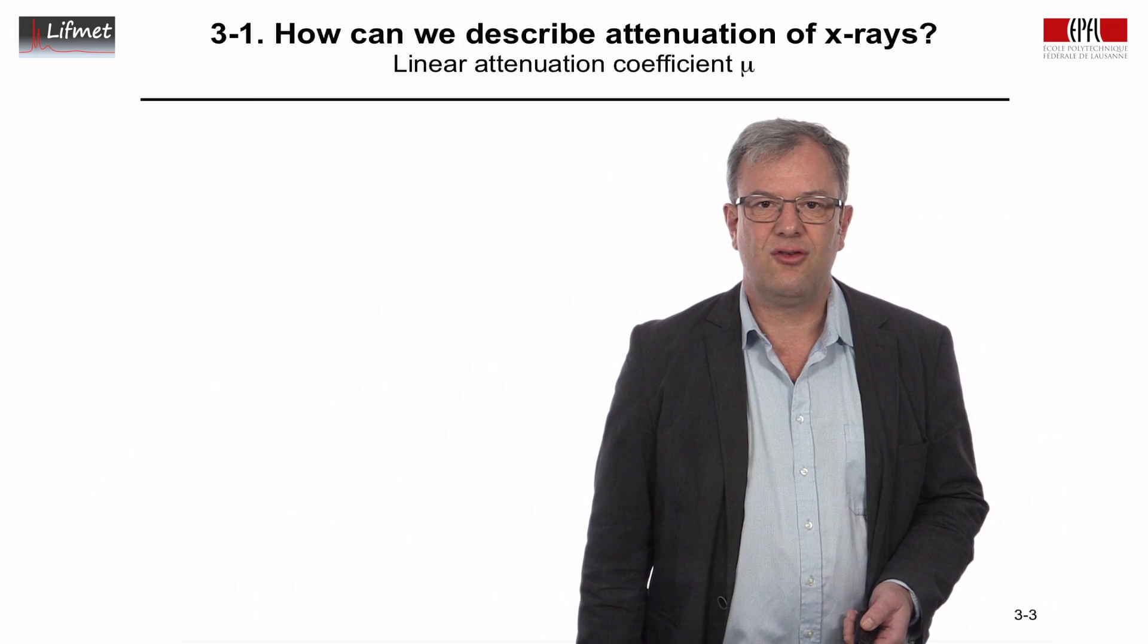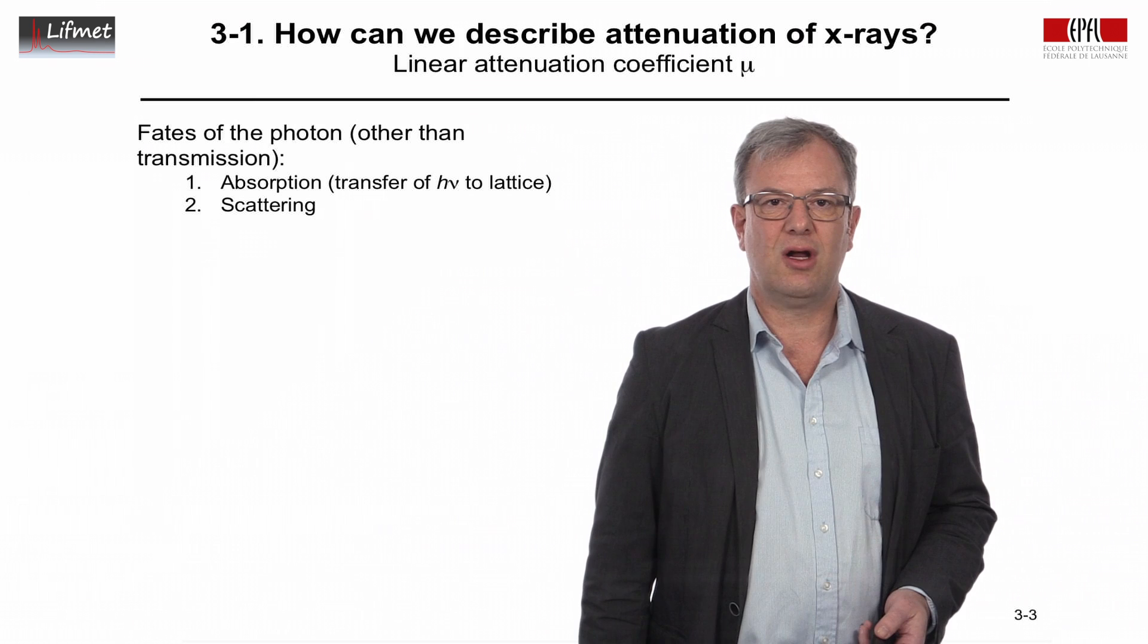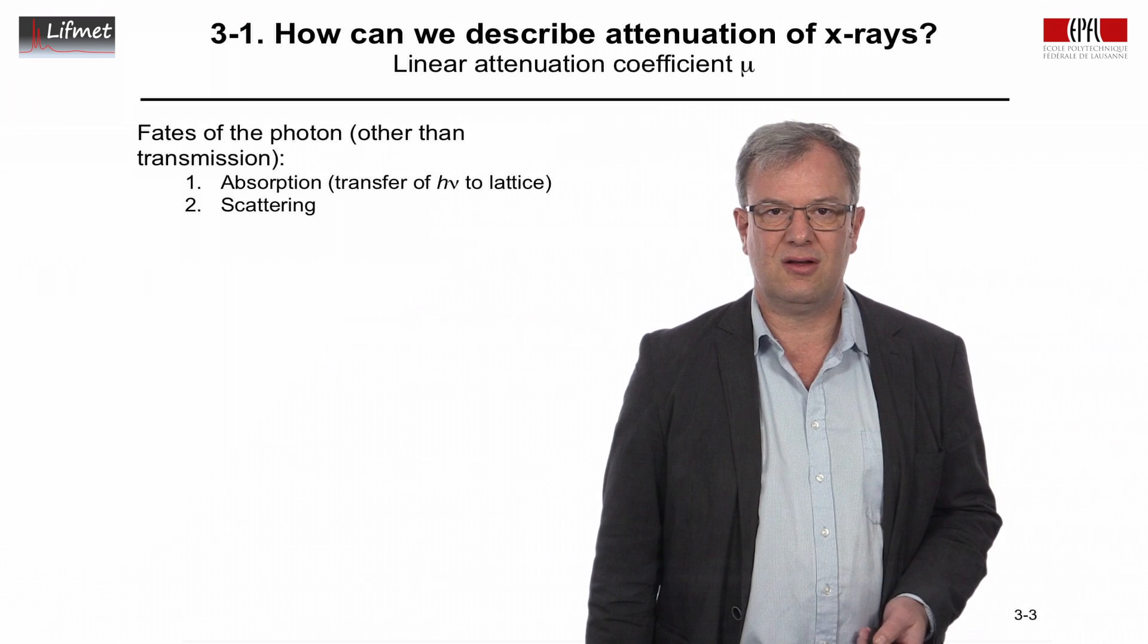So how can we describe the attenuation of X-rays? We'll just go with an empirical demonstration here. So aside from that the photon might just pass through our object, what are the fates that the photon can have? It can be absorbed, so it would transfer its energy to the lattice, to the tissue, or it can be scattered.